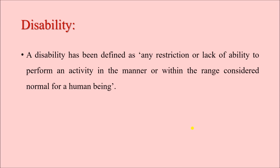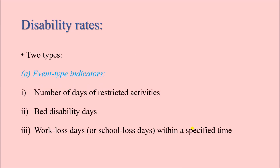In simple words, if a person is unable to perform any activity which is considered normal for his given age and gender, then it is said the person has some kind of disability. For example, if a person experiences a road traffic accident and loses his legs, he cannot walk. Since it is quite normal for a human being to walk, and because of the accident he now cannot, we say the person has some kind of disability. Disability indicators can be of two types: event type indicators or person type indicators.